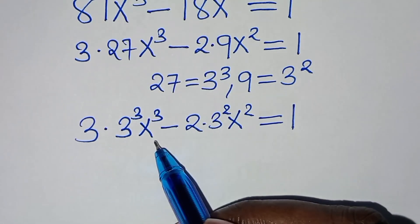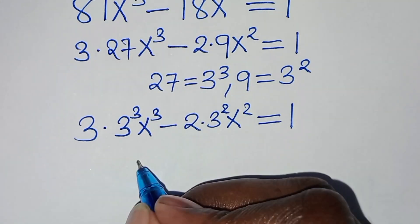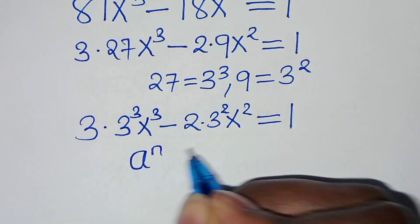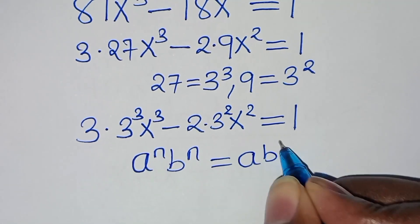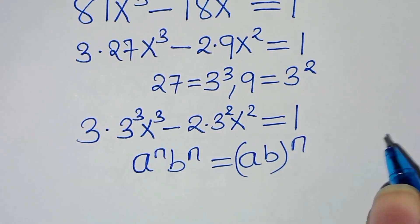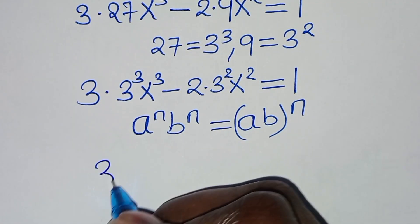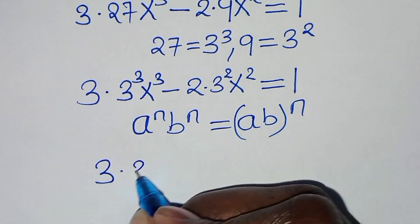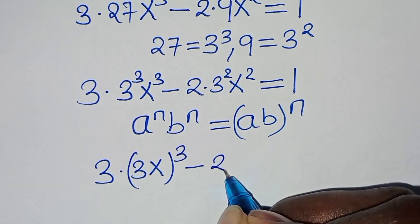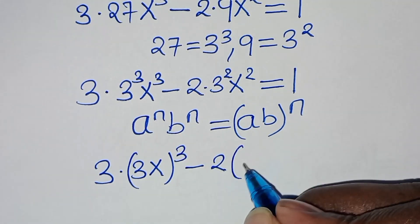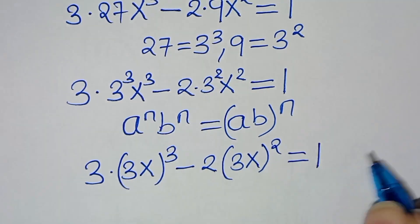Then we have 3 to the power of 3 times x to the power of 3, which is in the form of aⁿ times bⁿ, which we can express as (ab)ⁿ. Applying this exponent property, we have 3 multiplied by (3x)³, then subtract 2 times (3x)², and this is equal to 1.